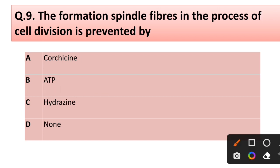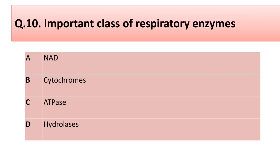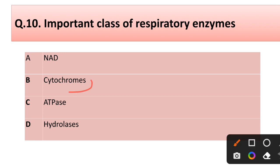Question number nine: the formation of spindle fibers in the process of cell division is prevented by — options: (a) quercetin, (b) ATP, (c) hydrazine, (d) none. Correct answer is option C: hydrazine.